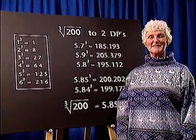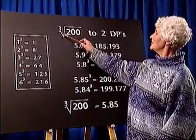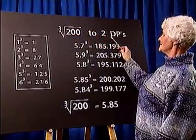Our first example for using a trial and improvement method is to find the cube root of 200 to two decimal places.